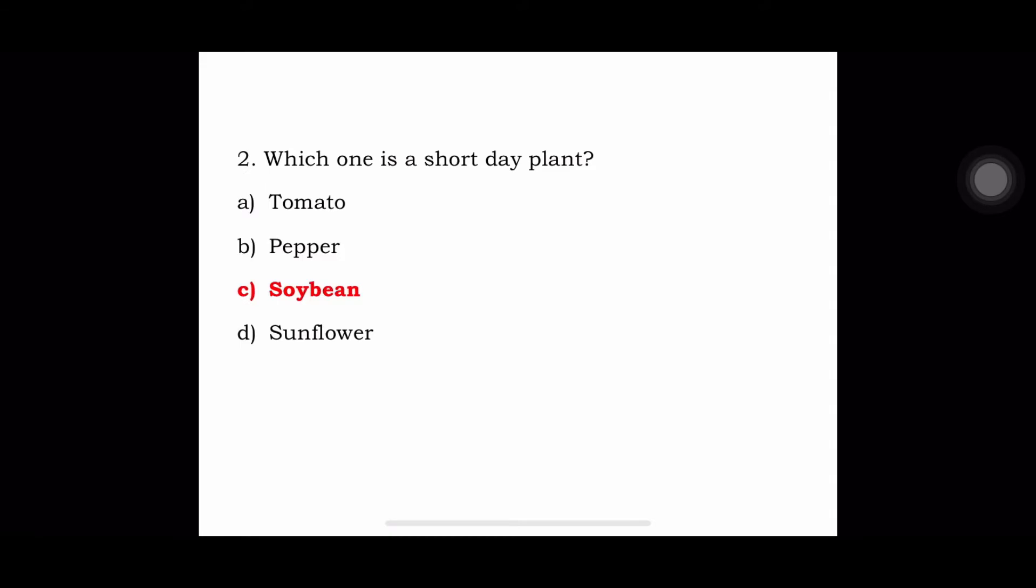Third question: The edible part of coconut is a) epicarp, b) mesocarp, c) endocarp, or d) endosperm. The answer is endosperm.